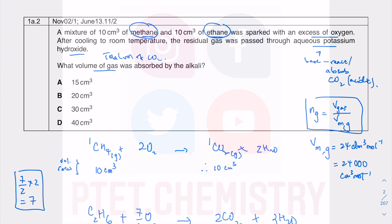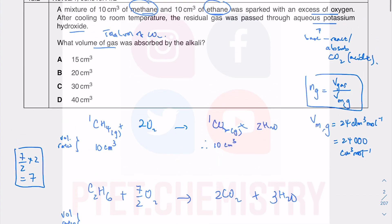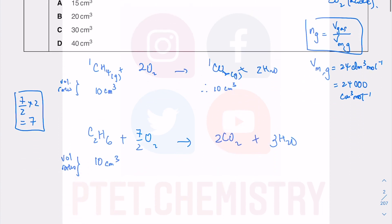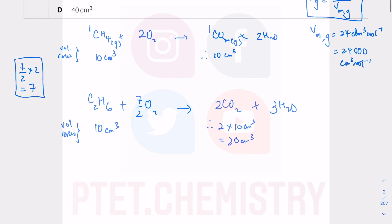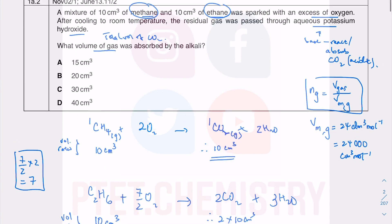For complete combustion of CH₄ with a 1:1 ratio, 10 cm³ gives 10 cm³ of CO₂. For C₂H₆, the balanced equation shows 1 mole gives 2 moles of CO₂, so you get twice the volume — 10 cm³ of C₂H₆ gives 20 cm³ of CO₂.